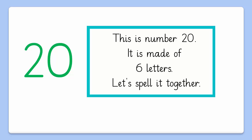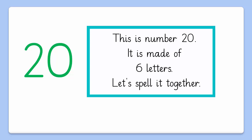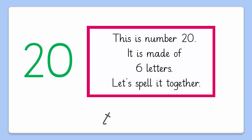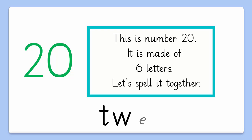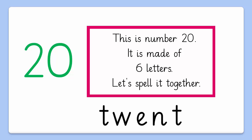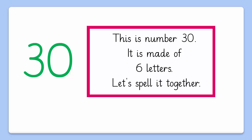Now let's see the T numbers one by one. Can you tell me which T number is this? Well done! This is number 20. It is made of 6 letters. Let's spell them together. That's great.